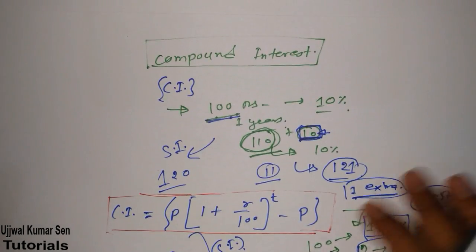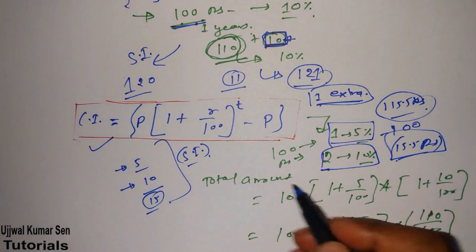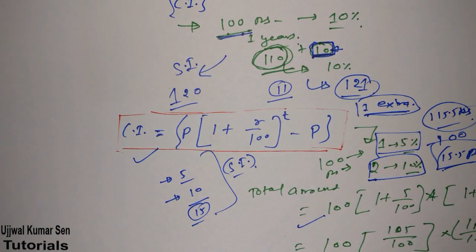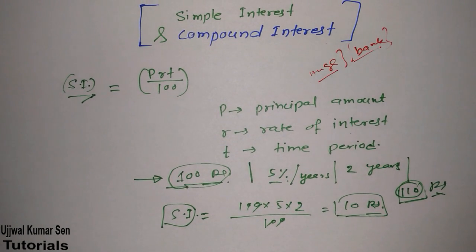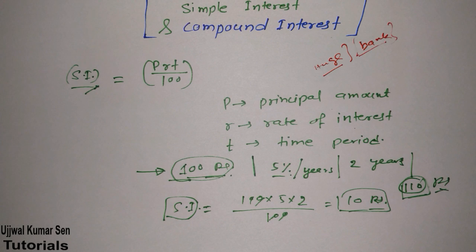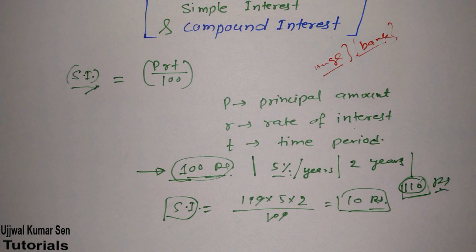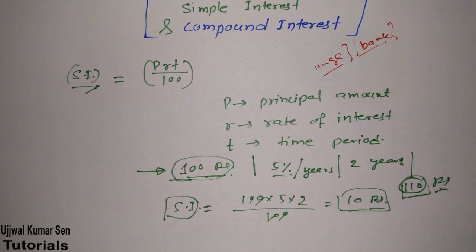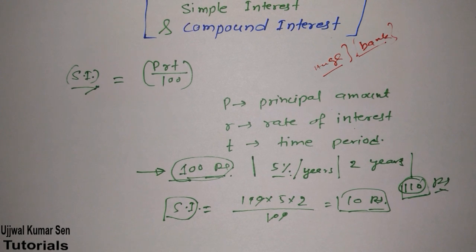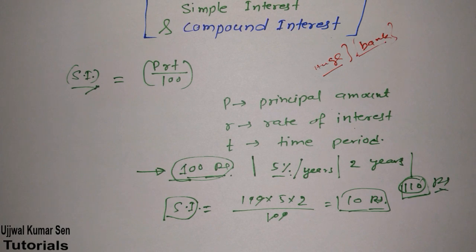So these formulas — two for compound interest (the standard annual compounding formula and the variable rate formula) and one for simple interest (P×R×T/100) — are the three formulas that can help you understand simple and compound interest. I have gone through more than 15 questions and found these three formulas are really important to remember. Once you start solving problems, you will develop the right approach.